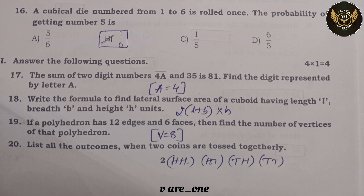Nineteenth question: if a polyhedron has 12 edges and 6 faces, then find the number of vertices of the polyhedron. Answer: vertices = 8.